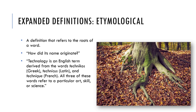An example of an etymological definition: 'technology is an English term derived from the words technikos (Greek), technicus (Latin), and technique (French). All three of these words refer to a particular art, skill, or science.' When you talk about where the words came from, that helps with understanding what the word means.